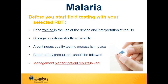When setting up field testing using the selected RDT, things that must be considered prior to the commencement of patient testing include: training should be conducted for all operators in the use and interpretation of results; storage conditions of the RDT must be continually monitored and adhered to; a formal quality testing process should be in place; blood safety precautions should be strictly followed; and most importantly, there must be a clear management plan for all patient results, as point of care testing is most effective when testing is linked to a clearly defined clinical pathway.